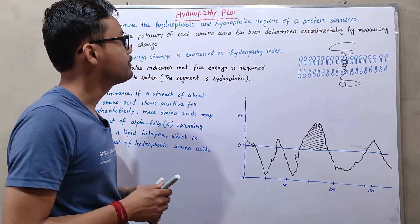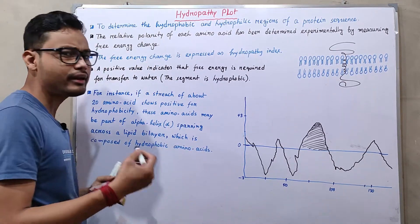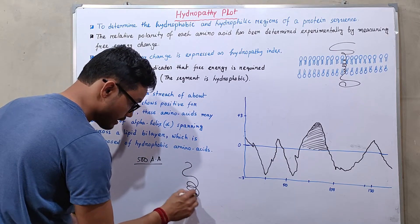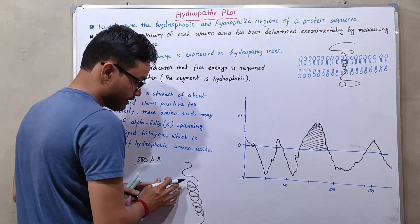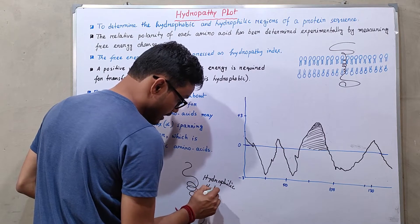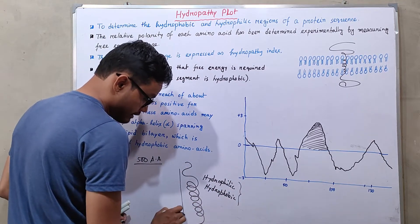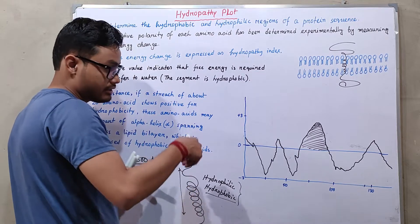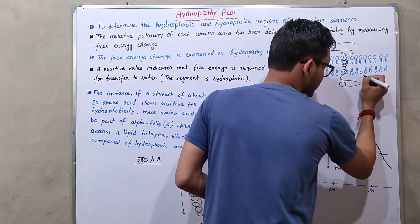To determine the hydrophobic and hydrophilic regions of a particular protein sequence — say, for example, a 500 amino acid protein — we analyze its composition. This protein is composed of both hydrophilic and hydrophobic amino acids. If this protein consists of hydrophobic amino acids, it can be spanned across the plasma membrane.